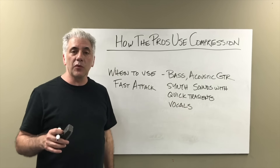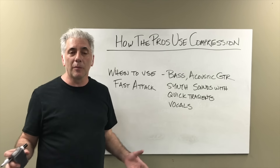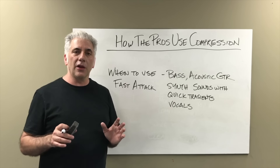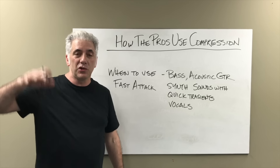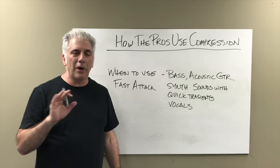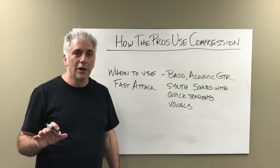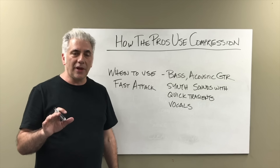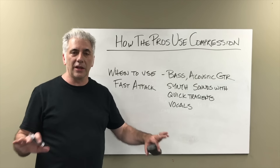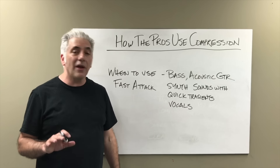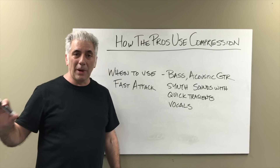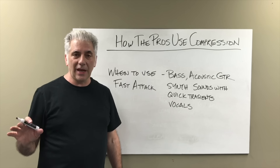Now vocals — a lot of times when I'm tracking vocals I'll use two compressors. I'll use one compressor to kind of slow down the transients because you don't want your vocals jumping all over. Sometimes I'll have a compressor set at a really slow setting, like a 2 to 1 ratio with a slow attack time, but then I'll have another one set with a higher ratio behind it with a fast attack time.